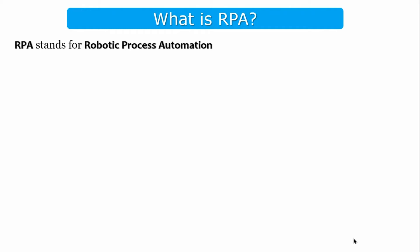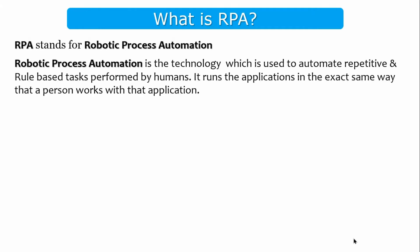What is RPA? RPA stands for robotic process automation. Robotic process automation is the technology which is used to automate repetitive and rule-based tasks performed by humans.